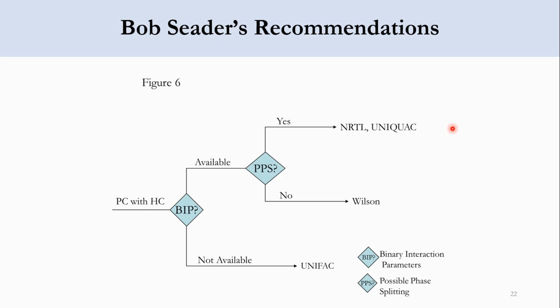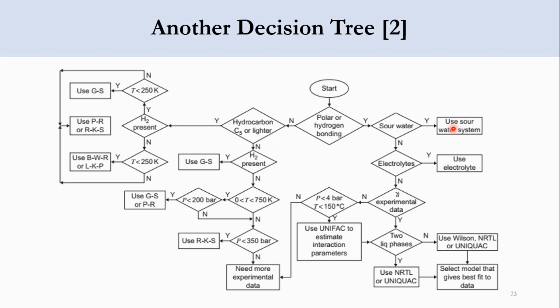Now there is another decision tree available, and we will go through it to select the property package. We start by checking whether polar or hydrogen bonding is available or not. If available, check whether sour water is a constituent. If yes, use sour water system.